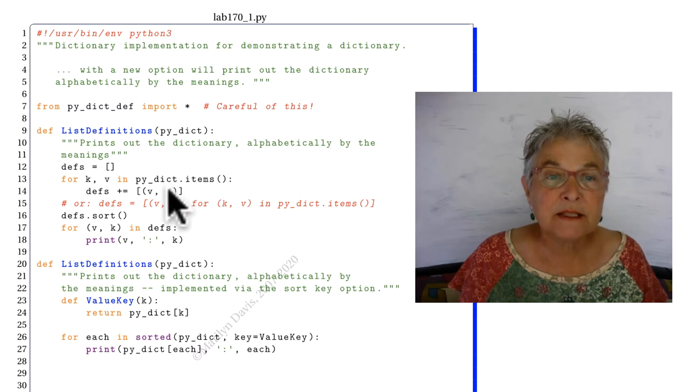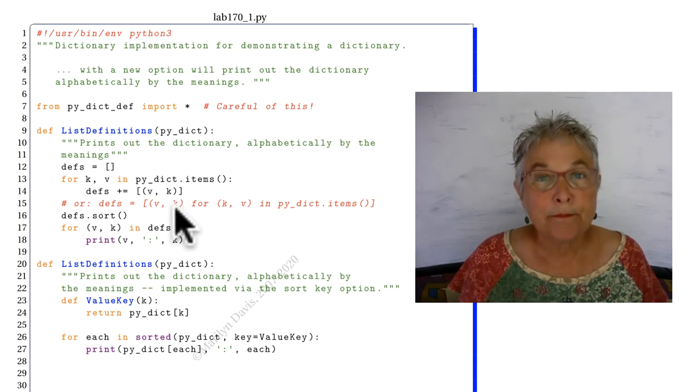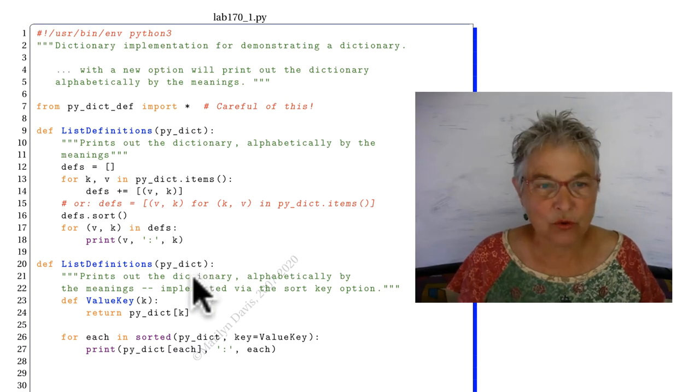And then I'm sticking them in my new list as value key. So these three are the same as that. Another way, using the key option of a sort.